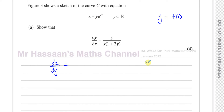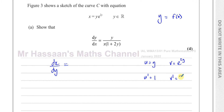To find dx/dy, we recognise a product of two functions: y and e to the power of 2y. So we use the product rule. Let u equal y and v equal e to the power of 2y. Differentiating u with respect to y gives 1. Differentiating v with respect to y using the chain rule gives 2e to the power of 2y, since the differential of 2y is 2.